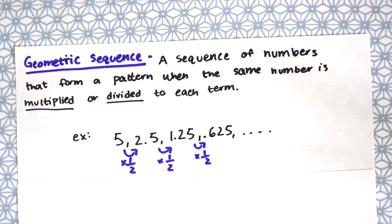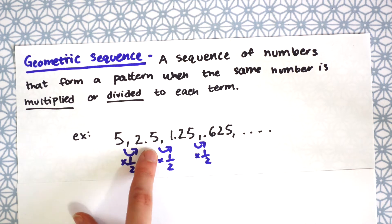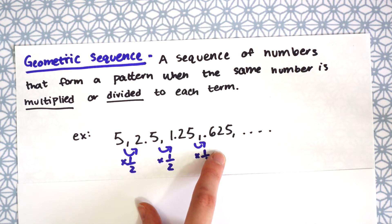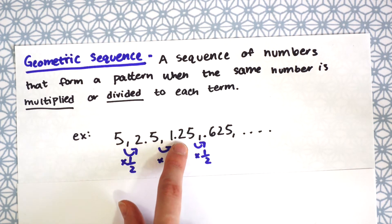It's a sequence of numbers that form a pattern when the same number is multiplied or divided to each term. So we have this example here and if you already know this please skip ahead to the next step. We have the sequence 5, 2.5, 1.25, and 0.625. And notice that we're multiplying each term times 1 half. So 5 times 1 half is 2.5 or you could think of it as dividing by 2, 5 divided by 2 is 2.5, 2.5 divided by 2 is 1.25, and the pattern keeps going.